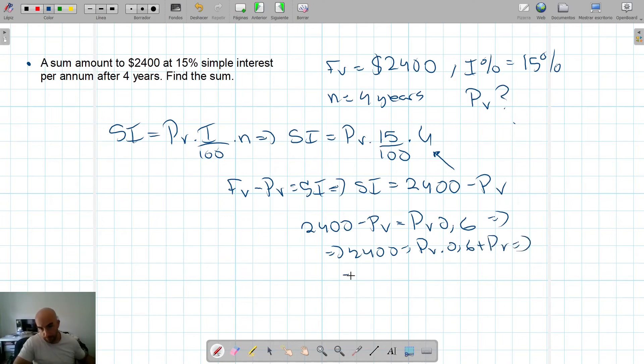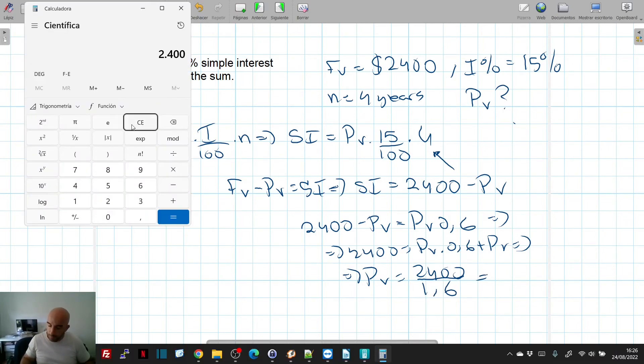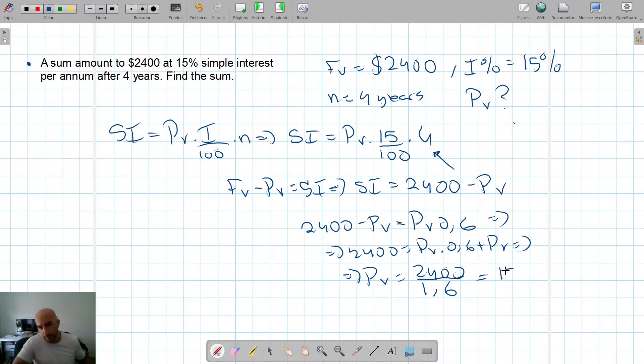So, PV equals 2,400 divided by PV times 0.6 plus PV. So, and if we do that, 2,400 divided by 1.6, it's 1,500 euros, dollars, sorry. So, the initial value was 1,500 dollars. Again, we can't do it in the calculator.